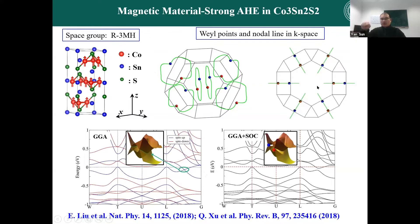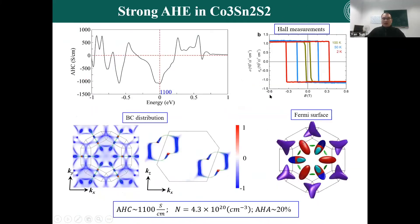This shows the distribution of the nodal-line and Weyl point band structure from the top view. We first analyzed the bulk transport properties from calculations and measurements. It shows a very large anomalous Hall conductivity, and this anomalous Hall conductivity is completely intrinsic. Even at zero field, we can have a very large Hall conductivity. After analyzing the origin, it comes purely from the topological band structure — from the nodal-line and Weyl point band structure.